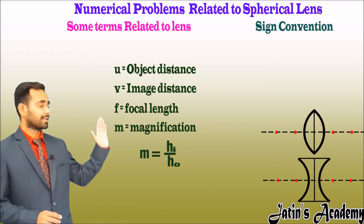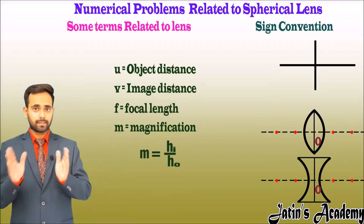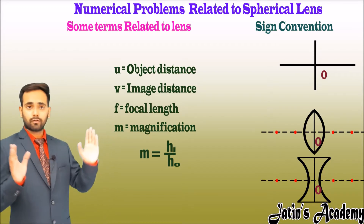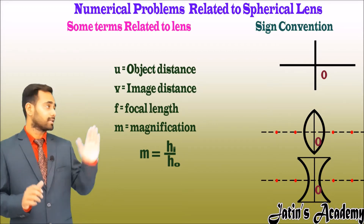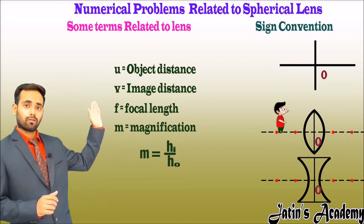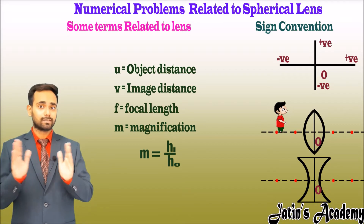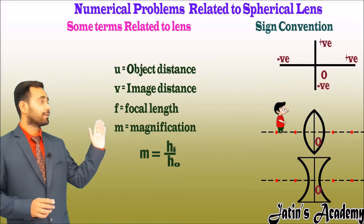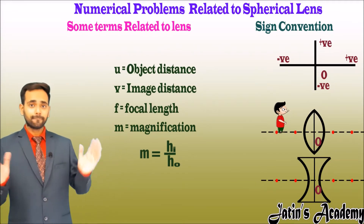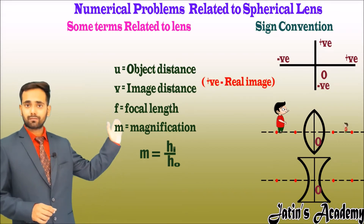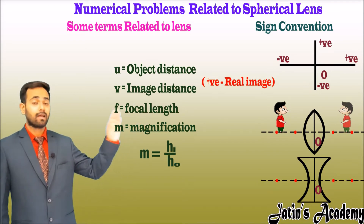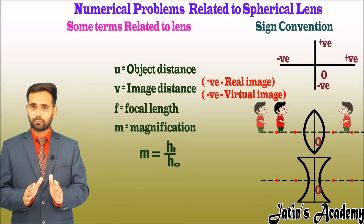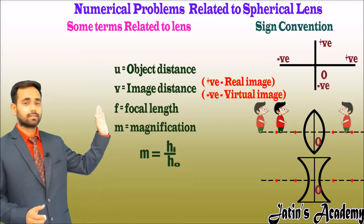To understand sign conventions, place the convex or concave lens at the origin of the coordinate axis — the optical center acts as the origin. The object is always placed on the left side, so the object value (u) is always negative (on the negative x-axis), and the object is always erect above the principal axis. For v: if positive, the image is formed on the right side (real image); if negative, the image is on the same side as the object (virtual image).